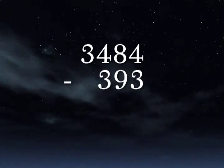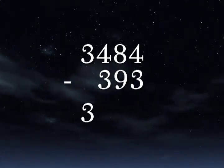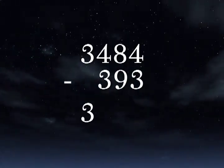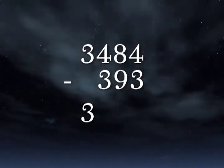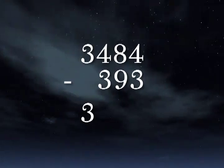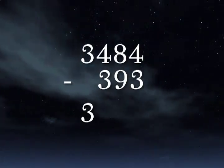3 minus 0 is 3. We can write 3 because that column will be unaffected by any borrowing. We can approach the next two columns together as 48 minus 39. 48 minus 39 is 9, but we have two columns to fill, so we write 09.